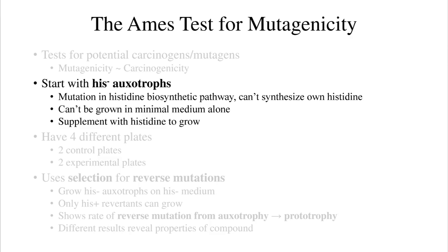The bacteria you plate are histidine-minus auxotrophs. This means they have a mutation in the biosynthetic pathway for making their own histidine, so they cannot grow on minimal medium unless it is supplemented with histidine. Remember, auxotrophs have a forward mutation. Prototrophs are wild type and can synthesize all of their essential amino acids, so they can grow on minimal medium.